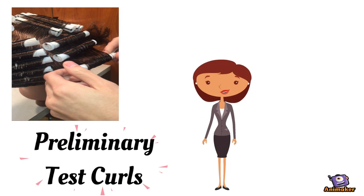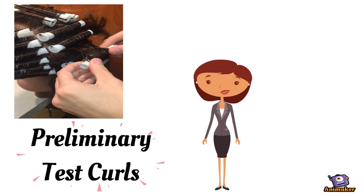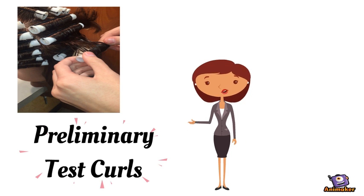An important part of a permanent wave is preliminary test curls. By testing your curls you will be given an idea of how well the hair will do with the perm you chose.